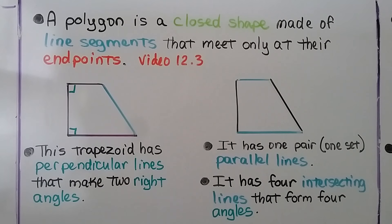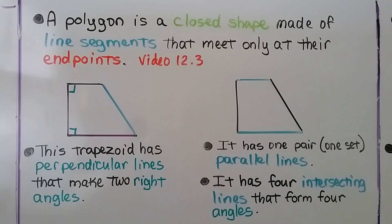A polygon is a closed shape made of line segments that meet only at their end points. We learned about that in the last video, 12.3, and of course that's linked in the description if you need it.